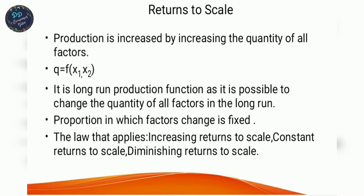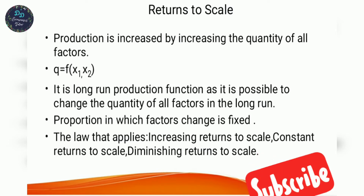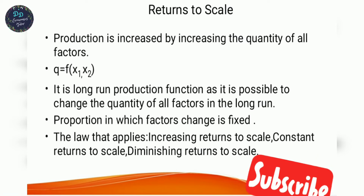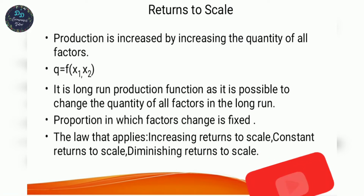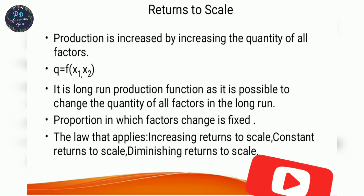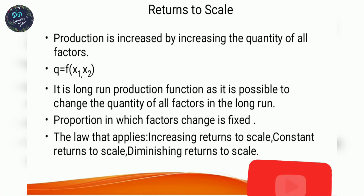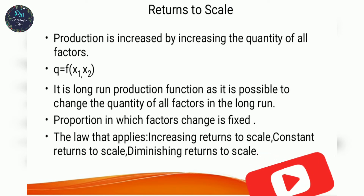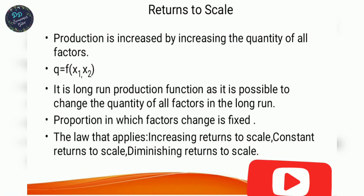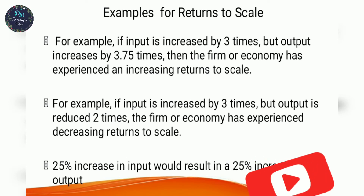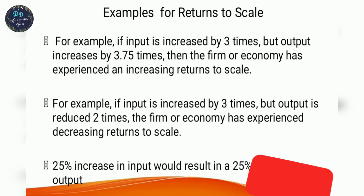Returns to scale: production is increased by increasing the quantity of all factors. All factors change and production is increased. The number of workers change is also increased. There are three types: increasing returns to scale, constant returns to scale, and diminishing returns to scale.